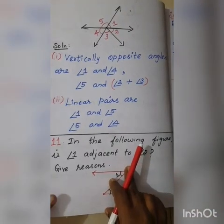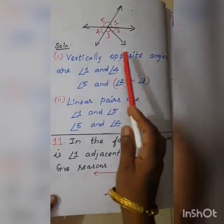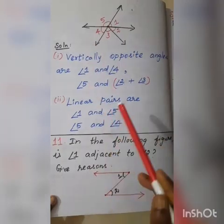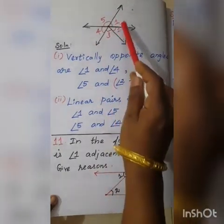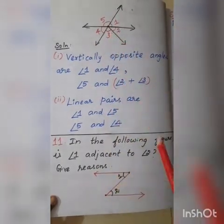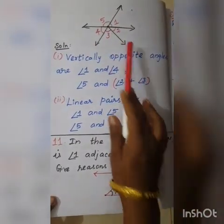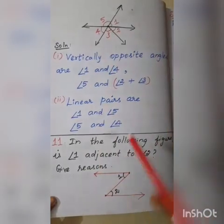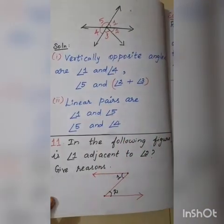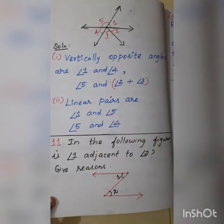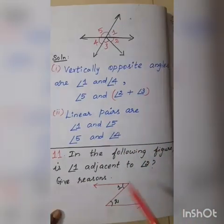Three angles — angle 1, angle 2, and angle 3 — where three lines meet: this is not a linear pair. A linear pair is a pair of angles only — two angles — not three. So this is not a linear pair.